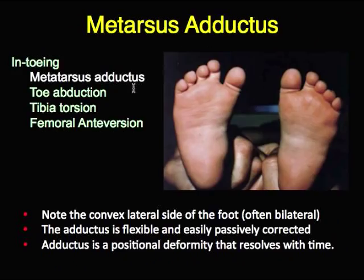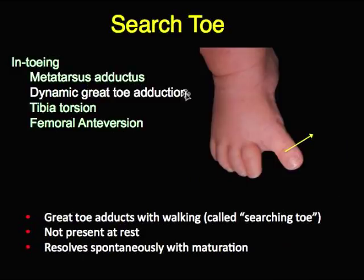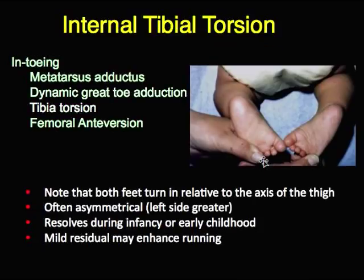Metatarsus adductus shows a convexity to the lateral border of the foot, which may be symmetrical or slightly asymmetrical. It is a flexible deformity — one can easily push the foot over and correct it. This is a positional deformity that tends to get better just with time. Another toe problem seen in infants is the so-called searching toe, where the great toe adducts or abducts dynamically while the child is walking. It is not present at birth or at rest and resolves spontaneously as the muscles become better balanced through increasing maturation.